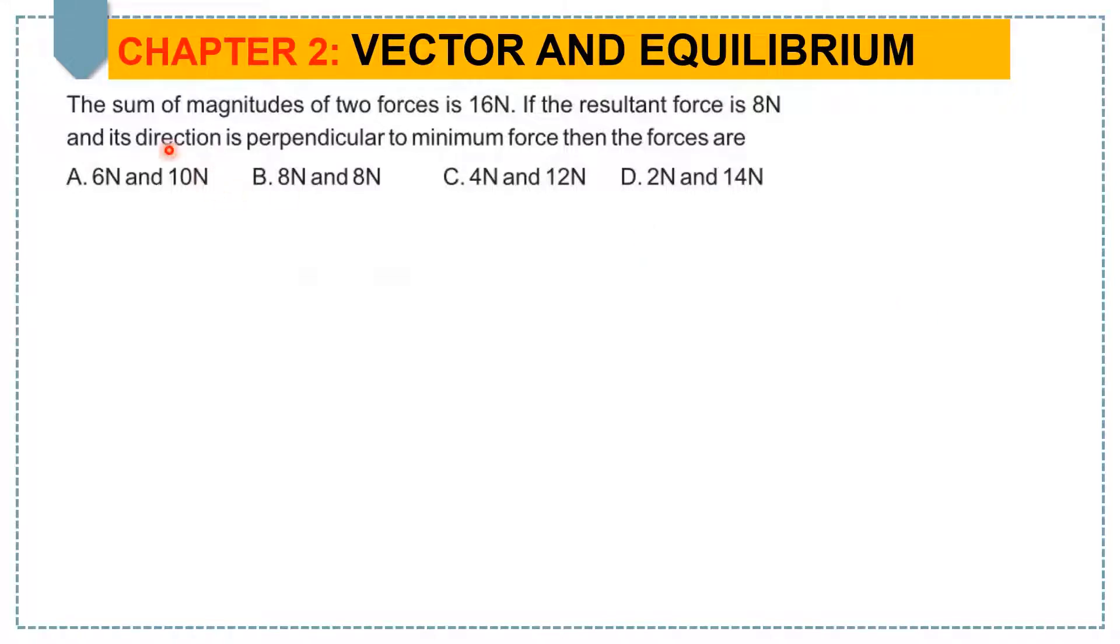Hello students, the question is the sum of magnitudes of two forces is 16 Newton. If the resulting force is 8 Newton and its direction is perpendicular to minimum force, then the forces are option A, option B, option C and option D.